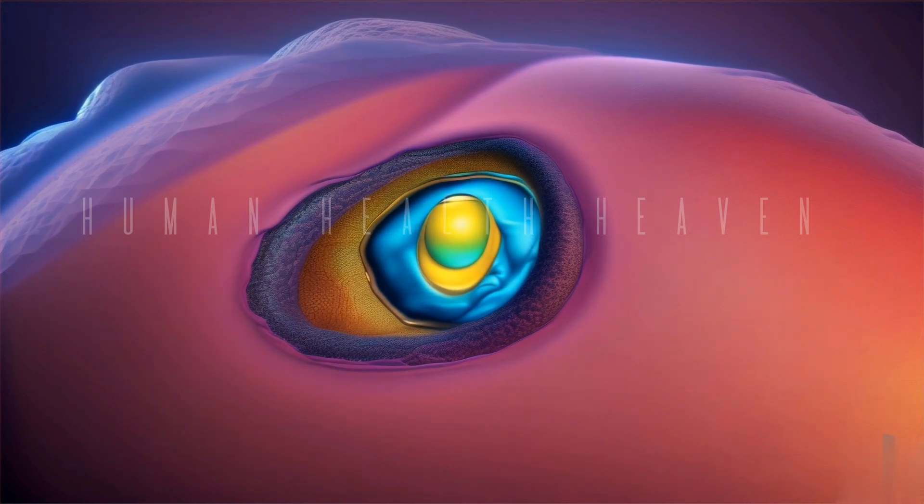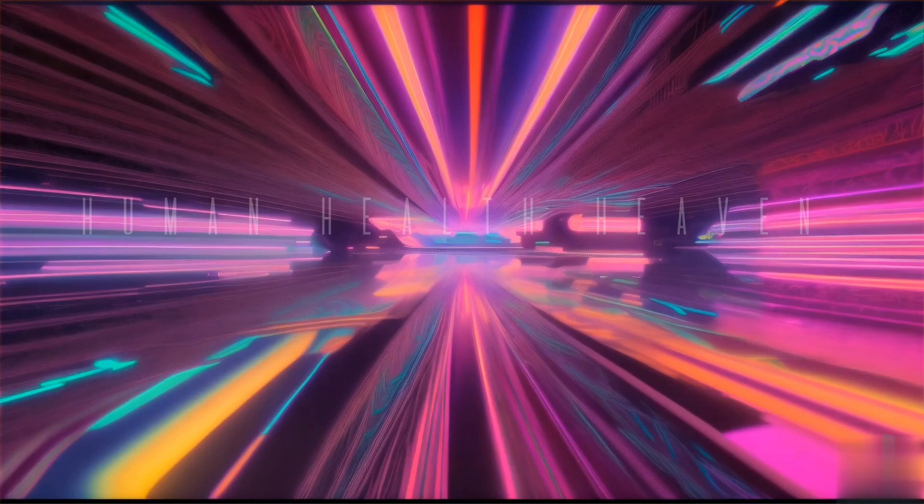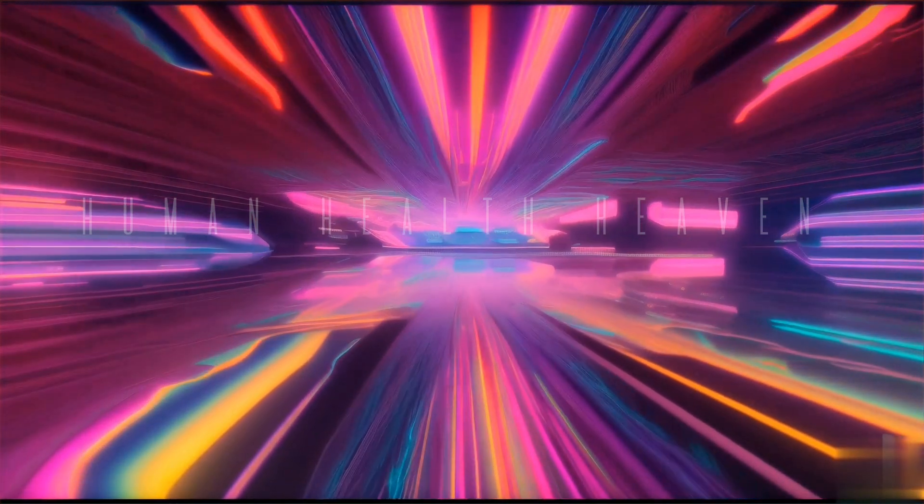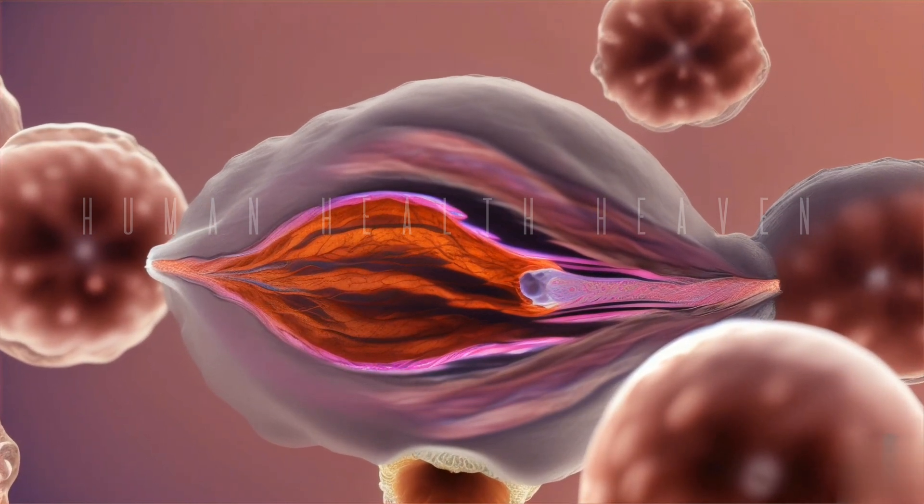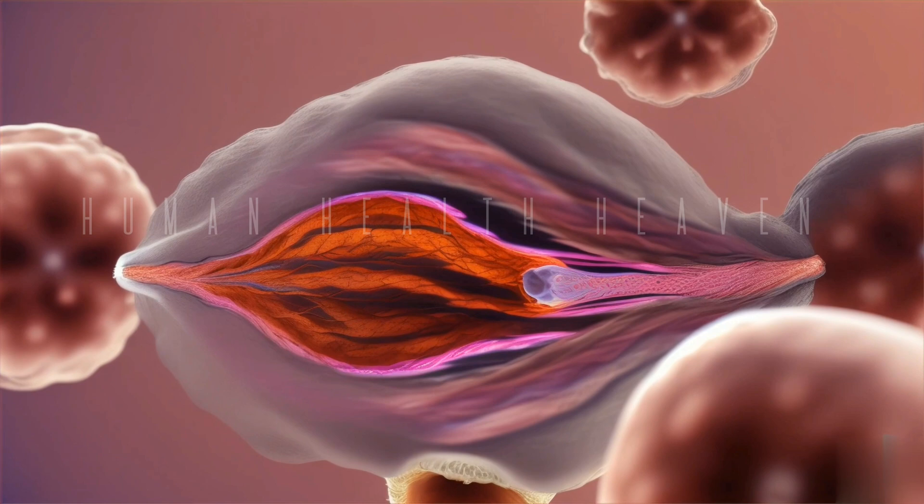As we conclude our journey into the realm of spleen anatomy, we hope you've gained a deeper understanding of this often overlooked organ. From its role in immune function to its involvement in blood filtration, the spleen proves to be an essential player in keeping our bodies running smoothly.